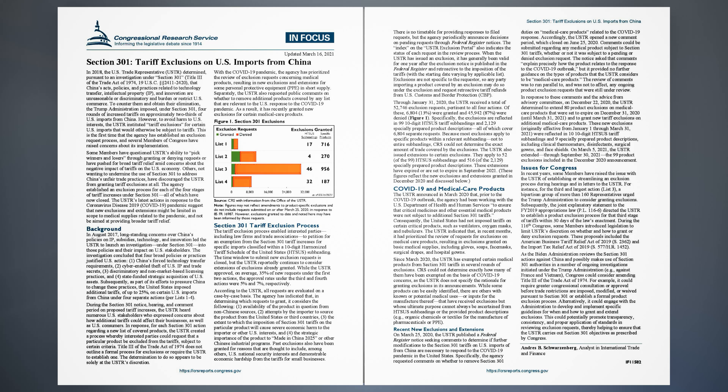Of these, 6,804 (13%) were granted and 45,942 (87%) were denied, as shown in Figure 1. Specifically, the exclusions are reflected in 99 10-digit HTSUS tariff subheadings and 2,129 specially prepared product descriptions, all of which cover 6,804 separate requests. Because most exclusions apply to specific products within a relevant subheading, not to entire subheadings, CRS could not determine the exact amount of trade covered by the exclusions. The USTR also issued extensions to certain exclusions. They apply to 52 of the 99 HTSUS subheadings and 516 of the 2,129 specially prepared product descriptions. These extensions have expired or are set to expire in September 2021.